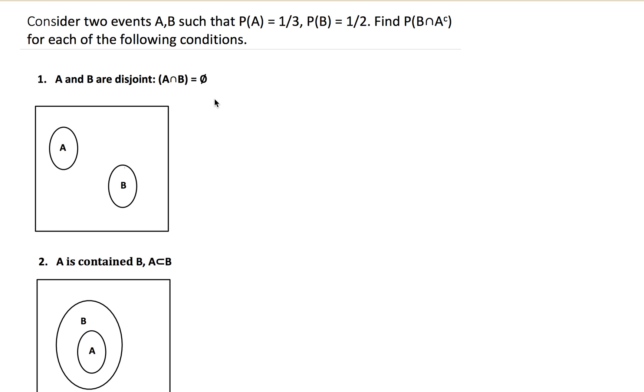Consider two events A and B such that the probability of A equals one-third, the probability of B equals a half. Find the probability of B intersect A complement for each of the following conditions.